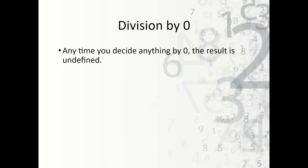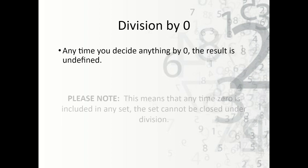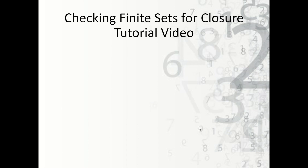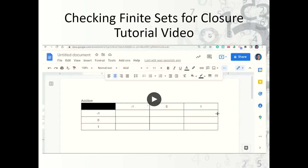Whenever we are checking closure under division, a set is never closed as long as the set includes zero. It's because if I divide anything by zero, the result is undefined. So anytime zero is included in the set, the set cannot be closed under division. There's a video here that shows you how to check closure for finite sets, so you can go ahead and watch that as well.